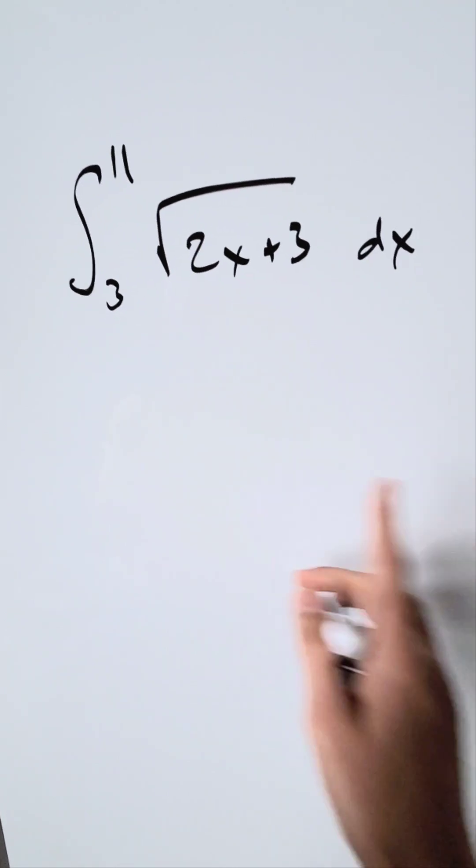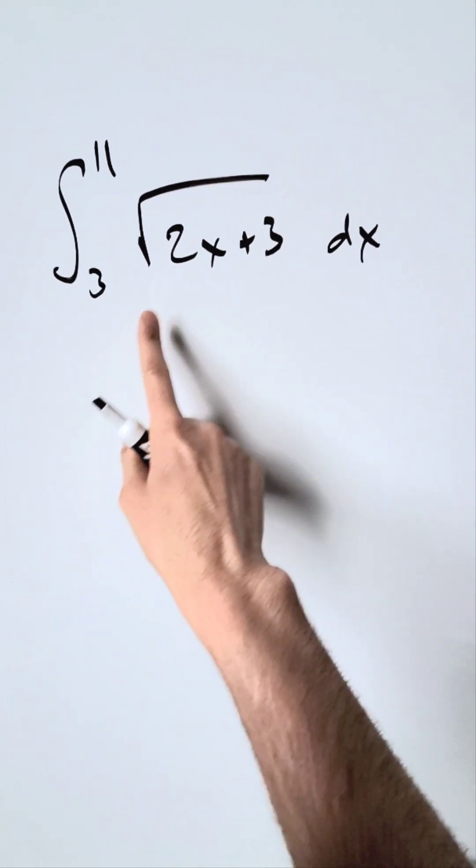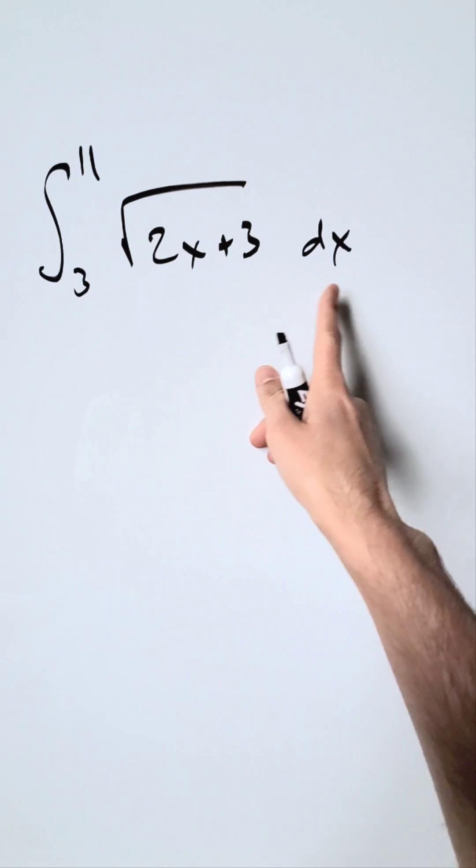Let's solve this definite integral. Lower limit 3, upper limit 11, square root of 2x plus 3 dx.